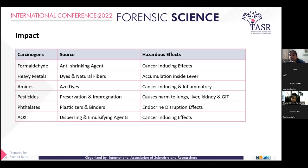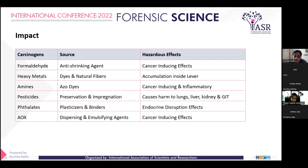It is compulsory to control these types of elements. Formaldehyde is used as an anti-shrinking agent, but simultaneously it induces cancer-causing effects. Similarly, amines, pesticides, and phthalates are harmful — phthalates have endocrine disruptive effects, pesticides are harmful for lungs and kidneys, and they get deposited into the GIT system of the human body, producing harmful effects.